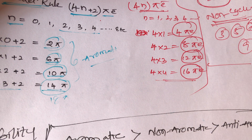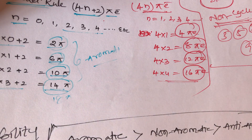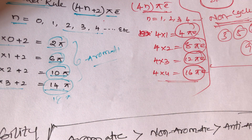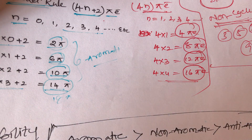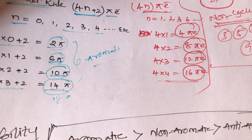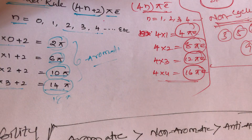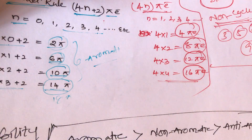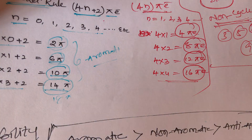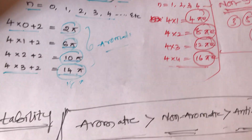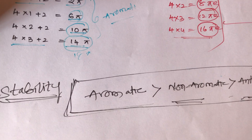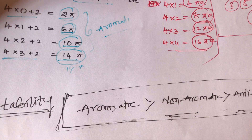Aromatic and anti-aromatic compounds both have cyclic, conjugated, and planar structures. Non-aromatic compounds are neither aromatic nor anti-aromatic. These are the simple tricks, students. If you like this video, please like, share, and comment. Thank you.